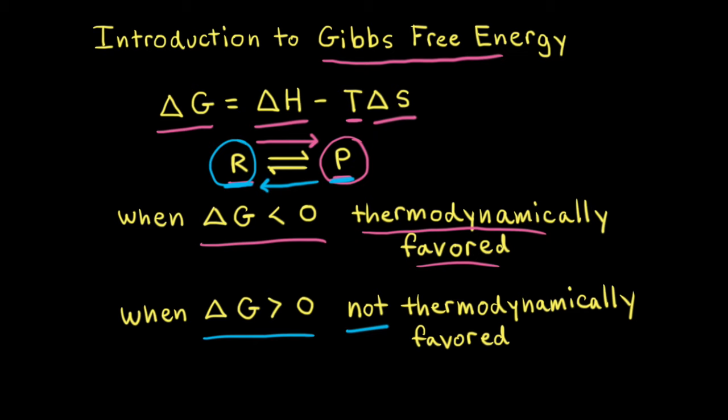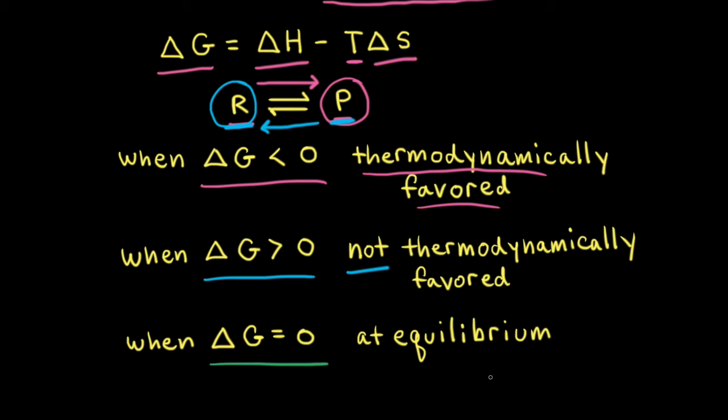When delta G is equal to zero, the chemical or physical process is at equilibrium. So for our chemical reaction, if delta G is equal to zero, the reaction is at equilibrium and the concentration of reactants and products will remain constant.